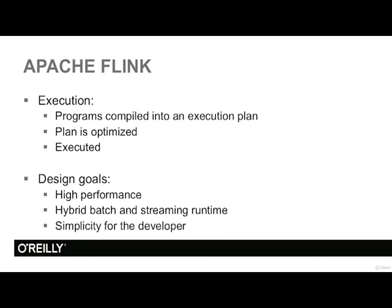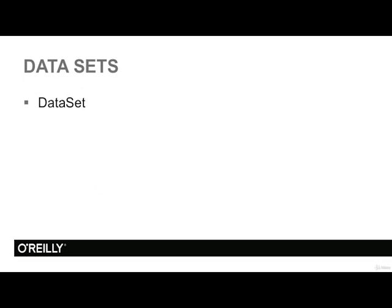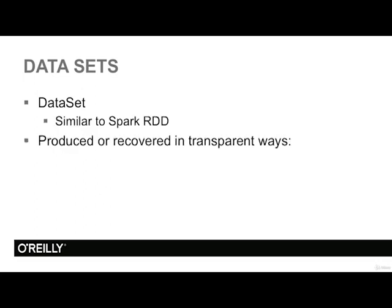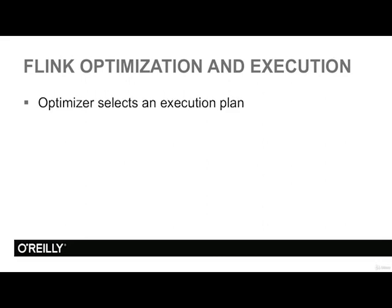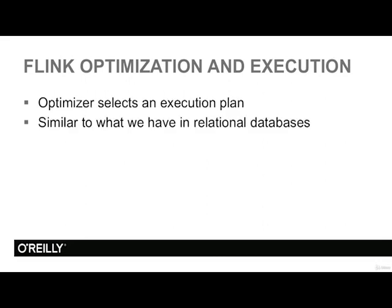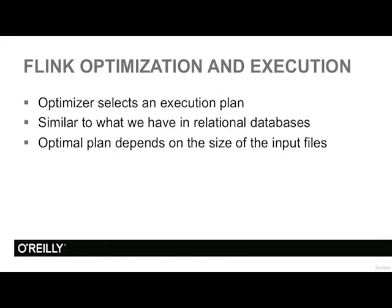Spark and Flink have many common programming points, and ideally you would use Scala — a very expressive language where few lines of code accomplish a lot. The internal data structure of Flink is called the Dataset. It is similar to the RDD in Spark and can be produced or recovered in transparent ways, like using in-memory collections. Sometimes it does not need to be materialized at all, and sometimes it is updated in an iteration. Flink's optimizer selects an execution plan similarly to relational databases, and the system can use the size of input files for optimization.